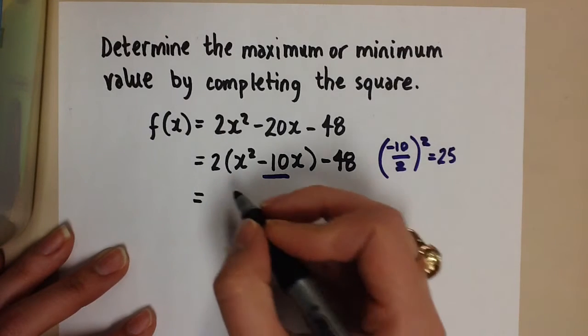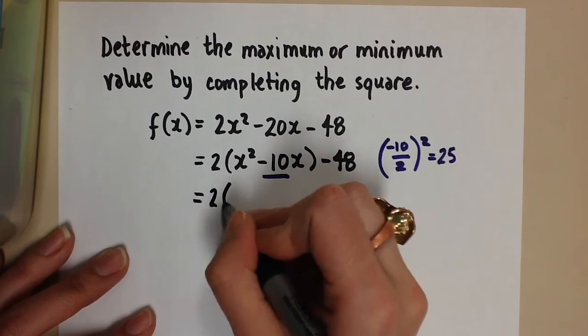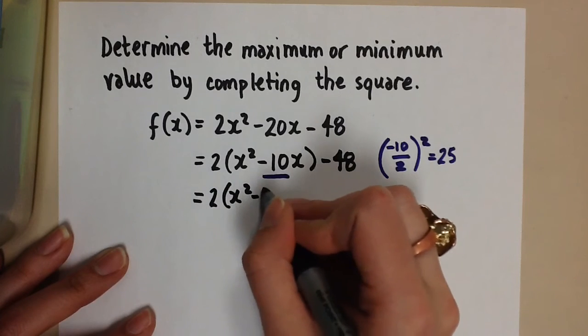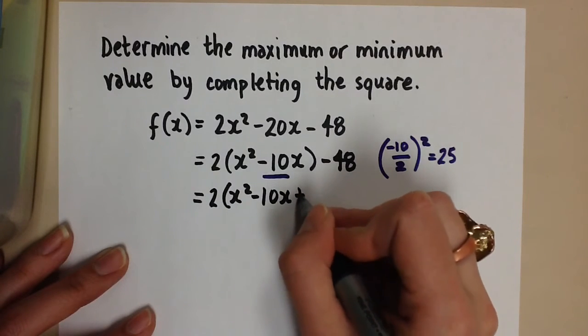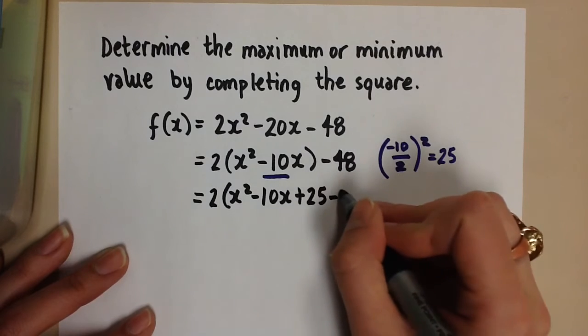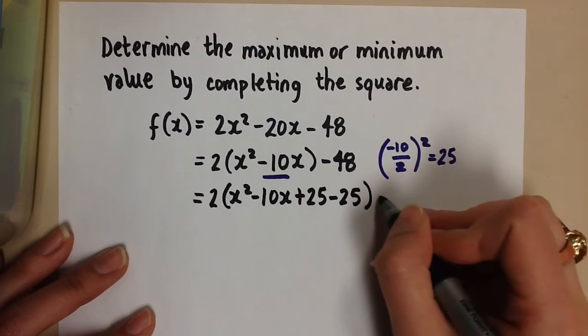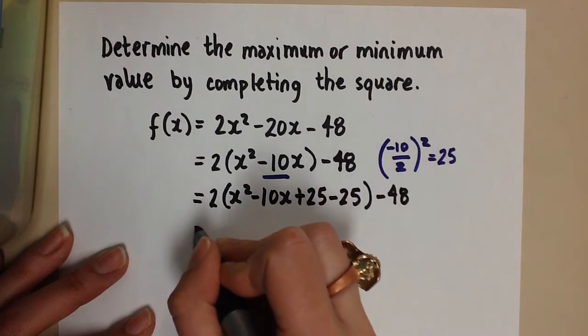So we're going to go back to the equation here. x squared minus 10x. We're going to add 25 and then subtract the 25. And don't forget about the minus 48 outside of the brackets.